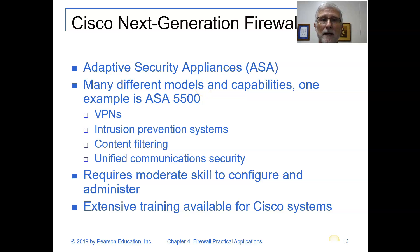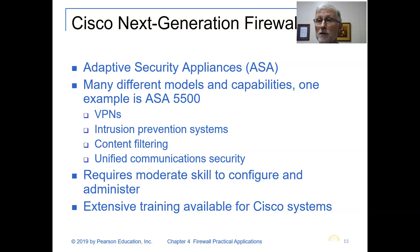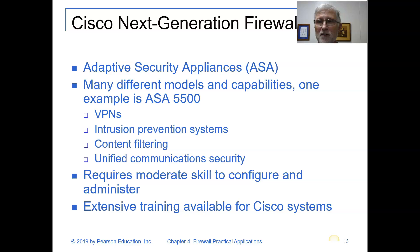Cisco's Next Generation firewall is usually an external device in an adaptive security appliance. It comes in many different models and capabilities. The ASA 5500 offers VPN, intrusion protection, content filtering, and unified communication security. It requires moderate skill to configure and administer, so if you enjoyed your Cisco classes and programming switches and routers, this may be right up your alley.